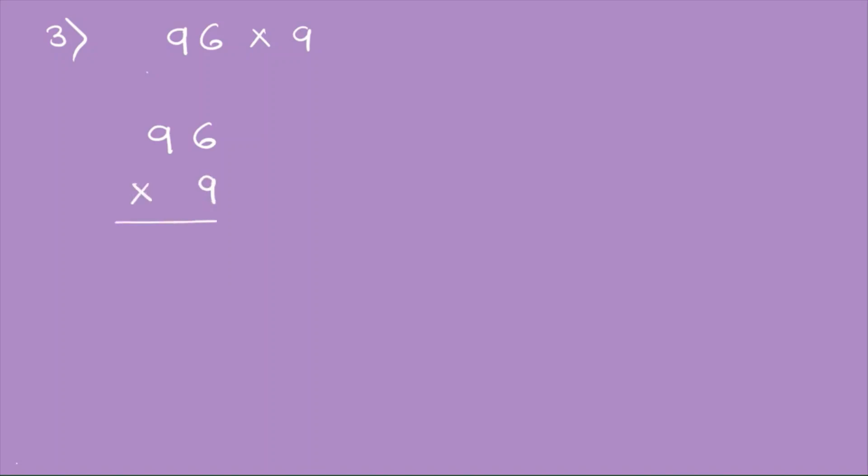Next example: 96 times 9. First I write the largest number, which is 96. Below it I write the smaller number, which is 9, placing it below the ones place in 96. Then give the multiplication symbol.